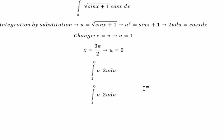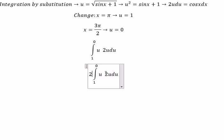So we have 2 times the integral of u squared. This gives us 2u to the power of 3 over 3, and we evaluate at the bounds. We get negative 2 over 3.